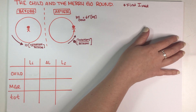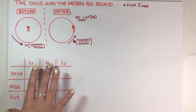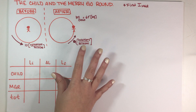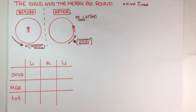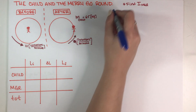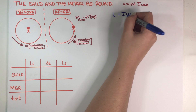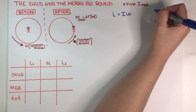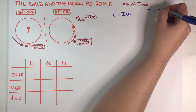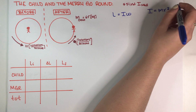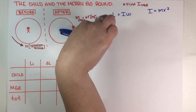I've drawn an angular momentum chart to help us figure this out. Let's start by filling in whatever we can. Remember that the equation for L is equal to I·ω. The moment of inertia for the child is also going to be mr² because the child can be treated as a point mass circling around the center point.